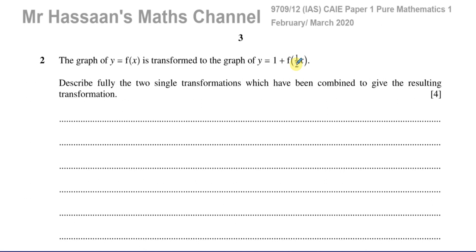We've got a combination of transformations that leads us from f of x to 1 plus f of a half of x. First thing: when we have a combination of transformations, we normally deal with what's inside the function first, and then what's outside the function. All the changes that take place inside the bracket we deal with first, and then we deal with the changes that are outside the bracket, which are separate from the function.